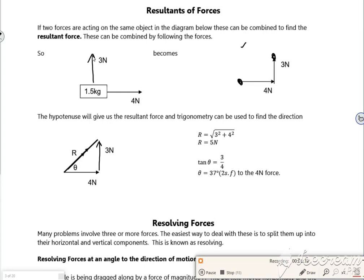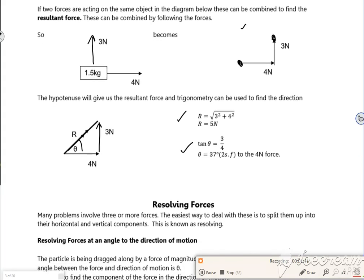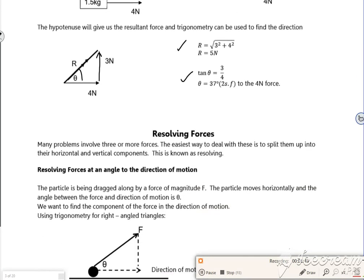And then if I wanted the resultant, I start at the start and go to the end of the last one and draw a line in. You can have quite complex diagrams where you draw them to scale. Anyway, so that's quite easy for us there. So we just use Pythagoras to work out the hypotenuse and we can use trig to work out the angle at which it works at. That's quite straightforward. That's quite nice.